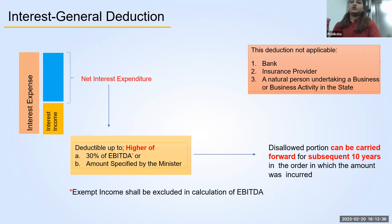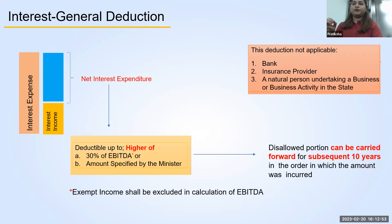For example, if your EBITDA is $100,000 and your interest expenditure for the current year is $40,000, then 30% of EBITDA is $30,000. So only $30,000 of your interest expenditure will be allowed to be deducted in the current year and the balance $10,000 will be carried forward. This net interest expenditure which is not allowed in the current year is allowed to be carried forward for only 10 subsequent years. If you are not able to set off this interest expenditure for the next 10 years, this interest expenditure gets lapsed in the 10th year and you will suffer a loss in that regard.